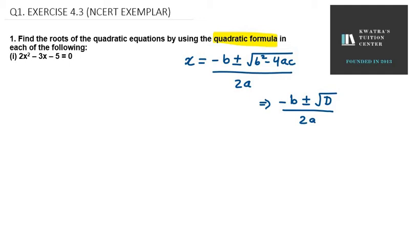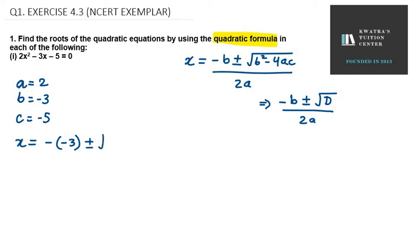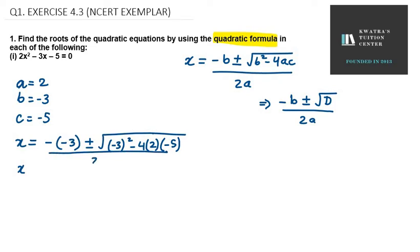We have 2x square minus 3x minus 5 equals 0. Here a is 2, b is minus 3, and c is minus 5. Now we will put all these values into the quadratic formula. So it will be minus b, that is minus of minus 3, plus minus under root b square, that is minus 3 square, minus 4ac, where a is 2 and c is minus 5, over 2a where a is 2.